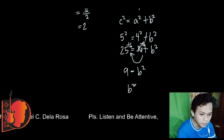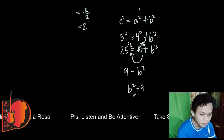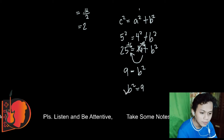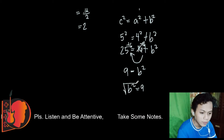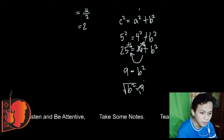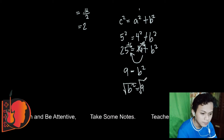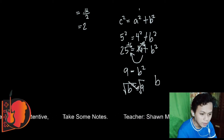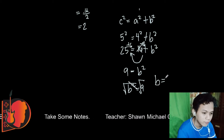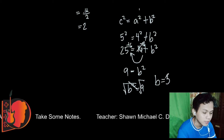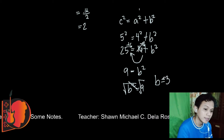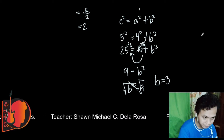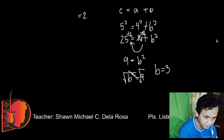B squared equals 9. Taking the square root of both sides, the square root of 9 is 3. So B equals 3, meaning 3 times 3 equals 9. We now have the height of the isosceles triangle.